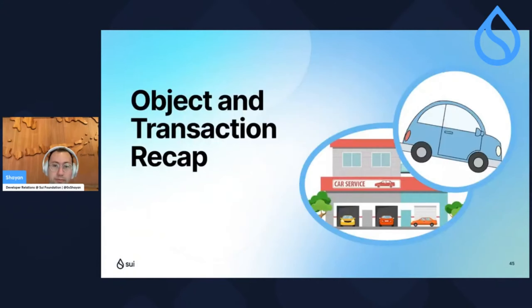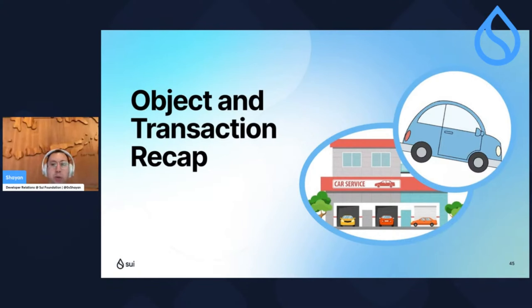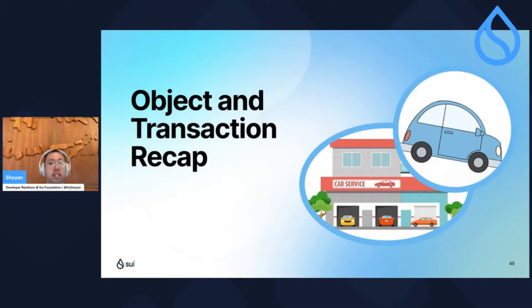Just to recap, we went over two different types of objects: owned and shared, and two different types of transactions: simple and complex. The car itself is an owned object — any time we transfer an owned object to another address, it's a simple transaction that bypasses consensus altogether. The car shop, however, is a shared object — anybody can interact with it, but those transactions are subject to consensus and are therefore complex transactions. Owned object equals simple transaction; shared object equals complex transaction.